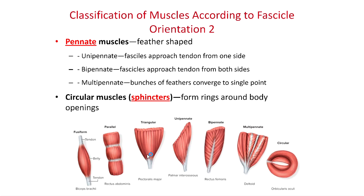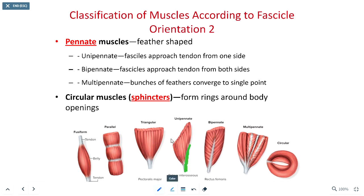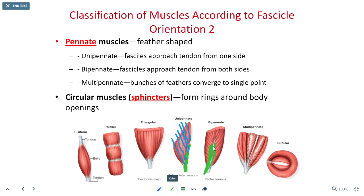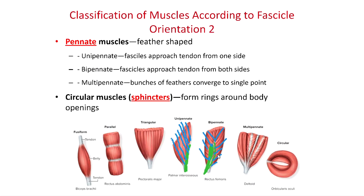We also have pinnate muscles, which are approximately shaped like a feather. Looking at the tendon, there is a strip of connective tissue going up, and individual muscle fibers branch off of that strip just like a feather. Bipennate muscles really look most like a feather, with fascicles coming up from the band of collagenous connective tissue to give that feather-like appearance. Unipennate muscles have one tendon, with fascicles all approaching from one side of that tendon. A good example is the palmar interosseous.